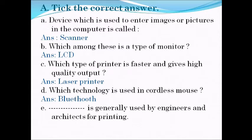Bluetooth technology is used in the cordless mouse. Next: which device is generally used by engineers and architects for printing? The plotter is the device generally used by engineers and architects for printing.